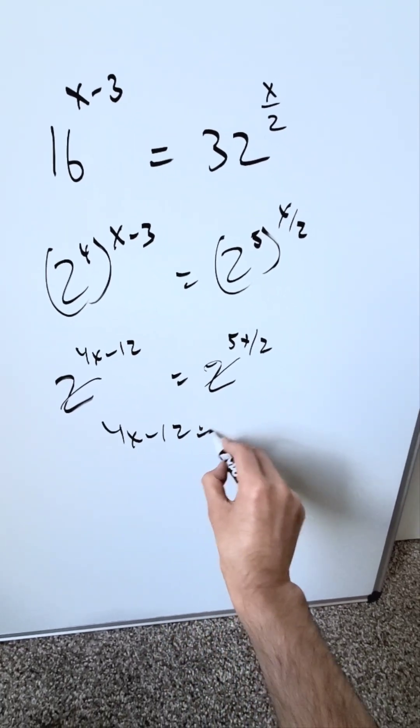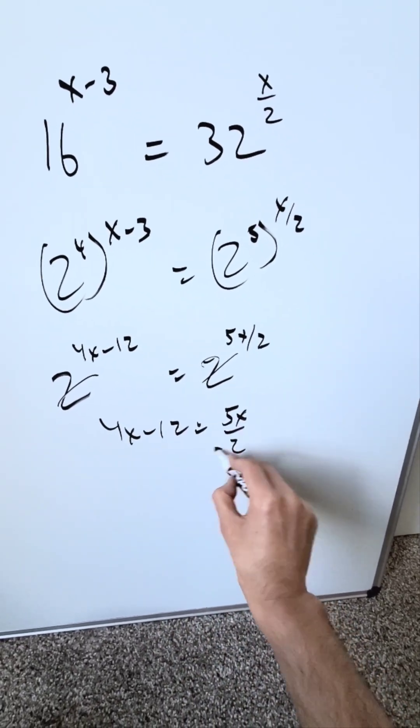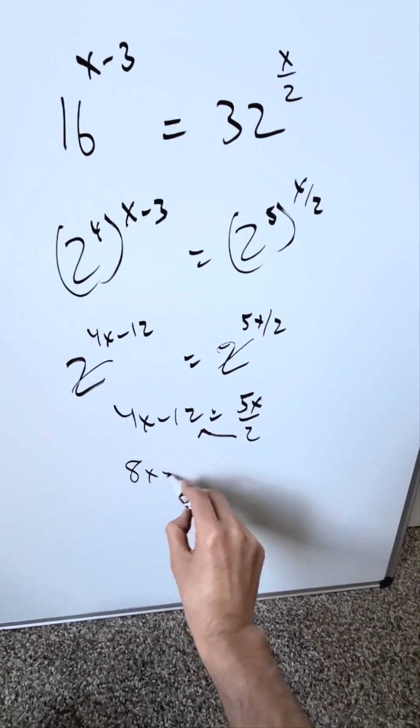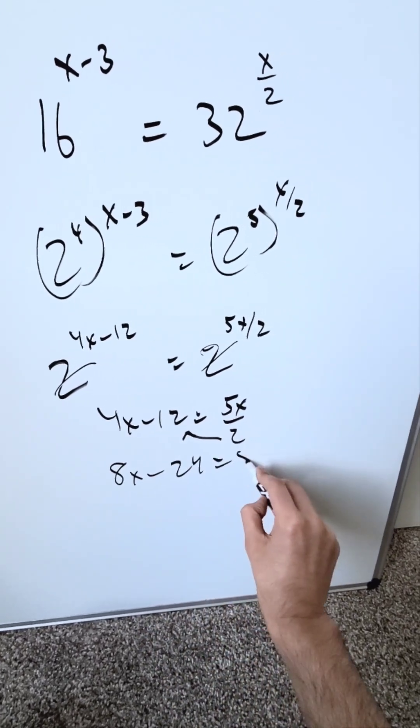I have 4x minus 12 is equal to 5x over 2. Push this on the other side. I have 8x minus 24 is equal to 5x.